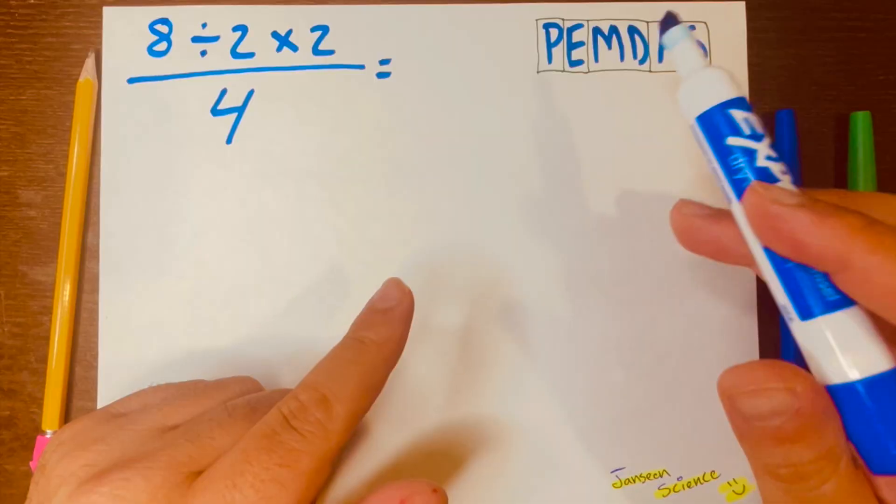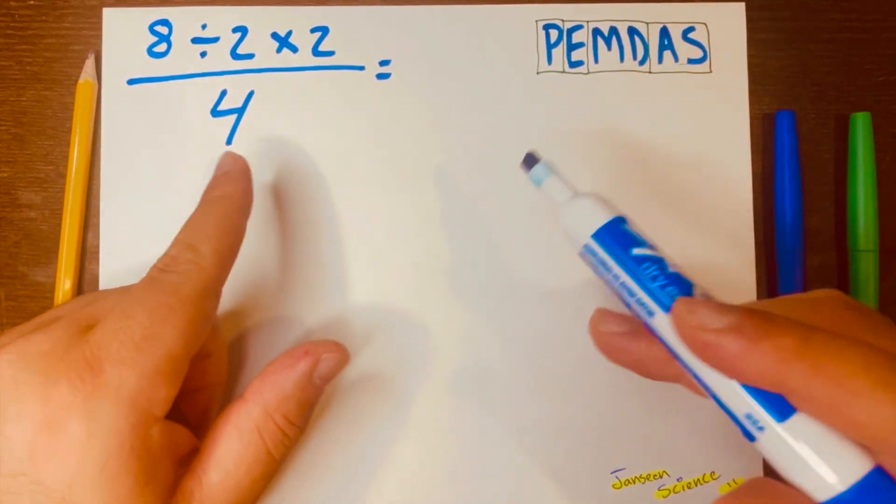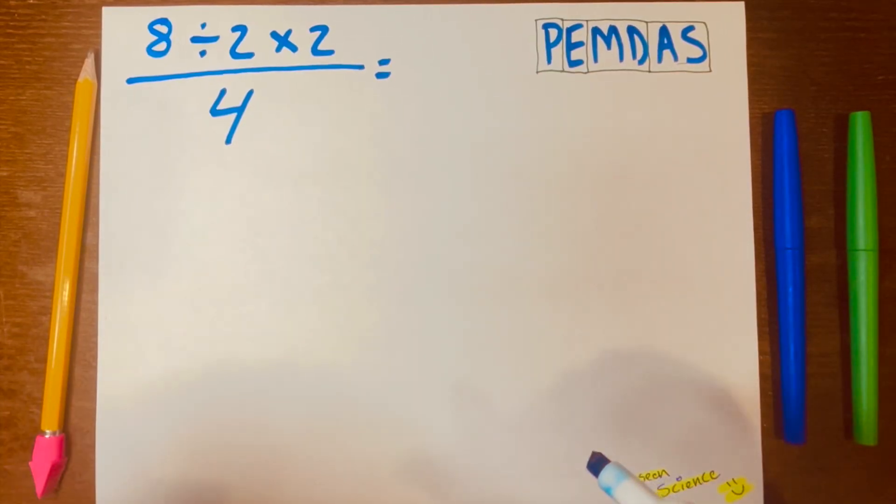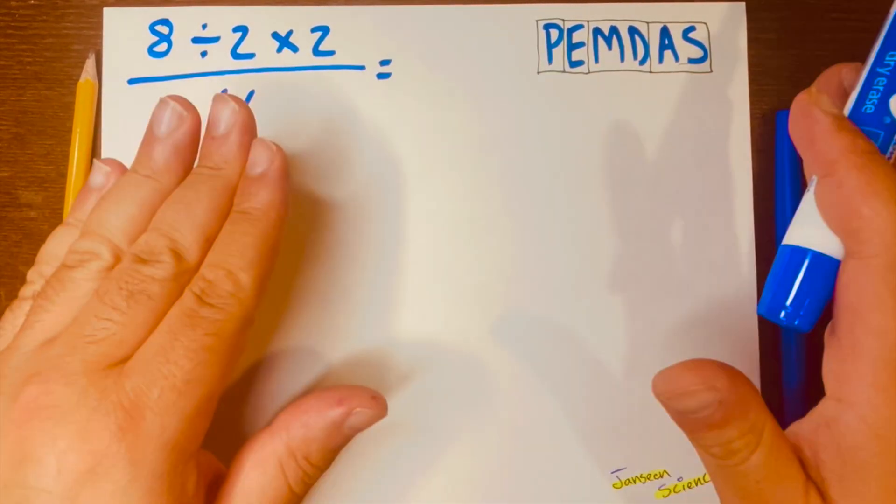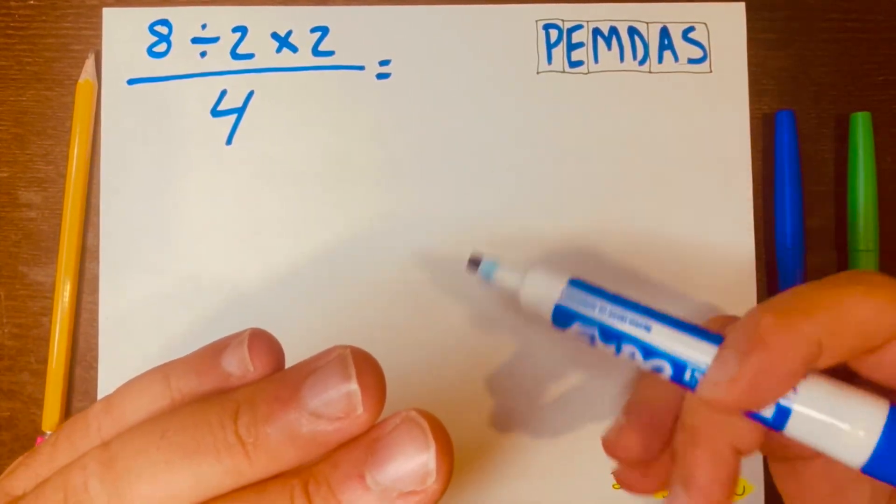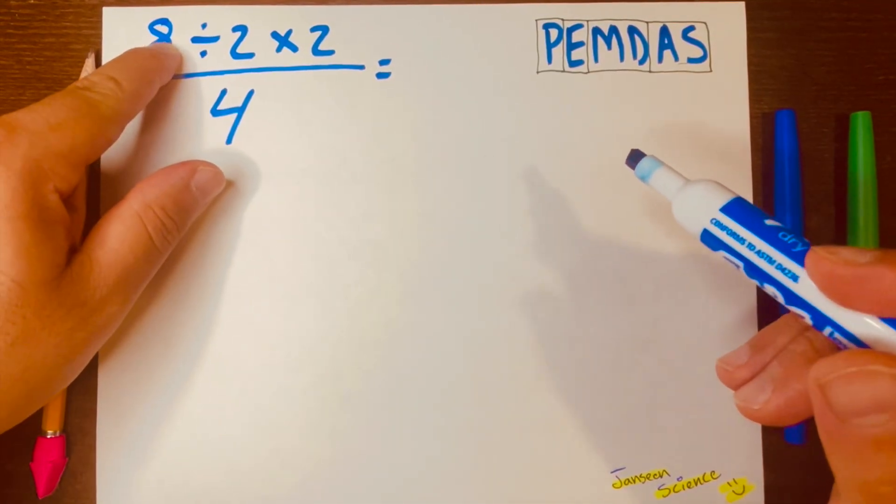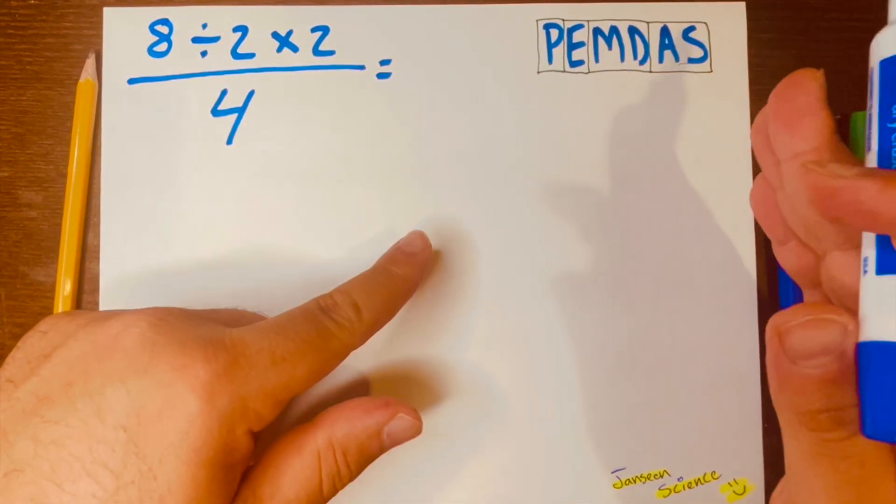Now, we need to use PEMDAS to help us figure out which way we go first. If you don't know what PEMDAS is, PEMDAS is just an acronym that helps you remember the order of operations to solve a problem like this. And we always read from left to right.